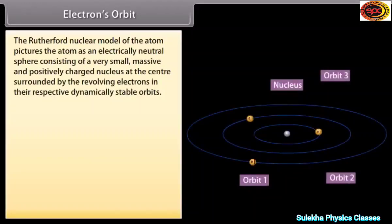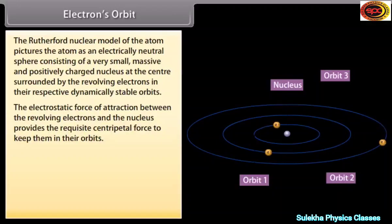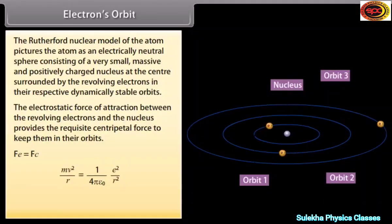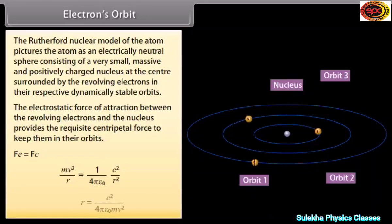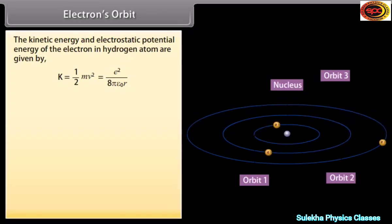Electrons' orbit: The Rutherford nuclear model pictures the atom as an electrically neutral sphere consisting of a very small, massive, and positively charged nucleus at the center, surrounded by revolving electrons in dynamically stable orbits. The electrostatic force of attraction provides the requisite centripetal force: Fe = Fc, giving MV²/R = (1/4πε₀)(E²/R²), so R = E²/(4πε₀MV²). The kinetic energy K = ½MV² = E²/(8πε₀R) and potential energy U = −E²/(4πε₀R).